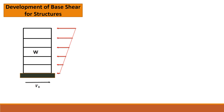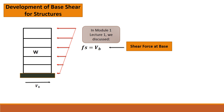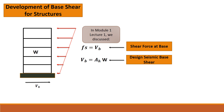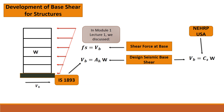Once the design spectra has been determined and established, the next step is towards analysis — specifically determining the base shear of the structure. In Module 1, Lecture 1, we discussed that a static equivalent shear force Vb equals Fs equals ku. Another way of determining base shear is from the inertial forces, whereby Vb equals Ah times W. This is conveniently known as the design seismic base shear.